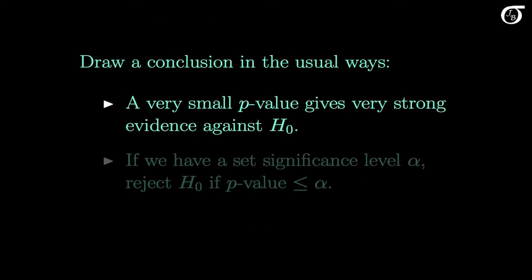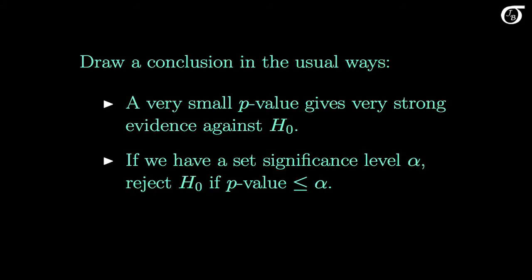Then we draw a conclusion in the usual ways. A very small p-value gives very strong evidence against the null hypothesis and in favor of the alternative hypothesis. If we are carrying out the test at a set significance level alpha, we can reject the null hypothesis in favor of the alternative hypothesis if the p-value is less than or equal to alpha. We could also say the evidence against the null hypothesis is statistically significant if the p-value is less than or equal to alpha.